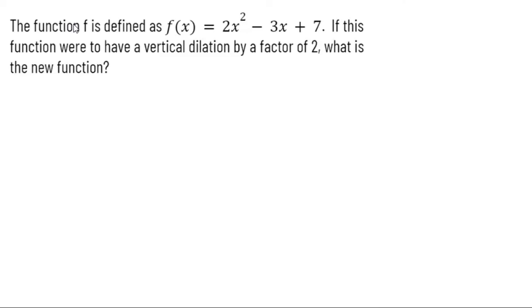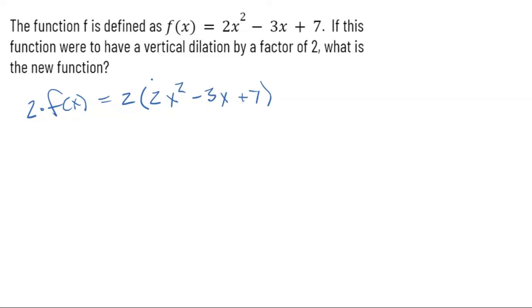In this example, the function f is defined as f of x equals 2x squared minus 3x plus seven. If this function were to have a vertical dilation by a factor of two, what is the new function? A vertical dilation means we take f of x and multiply it by two on the outside. So I take two times the quantity 2x squared minus 3x plus seven. That answer is correct as-is, but distributing gives four x squared minus six x plus fourteen.